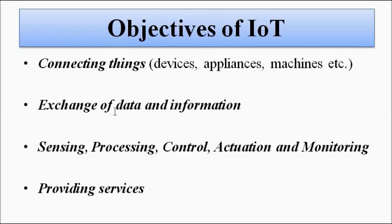As I said, IoT is a combination of various engineering branches — computer science, instrumentation, communication, all branches. The final objective is to provide services. Various types of services are provided by the IoT system: sensing, processing, control, actuation, and monitoring, which are required in various fields.